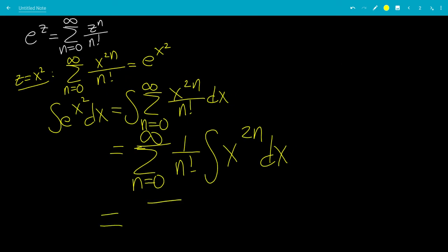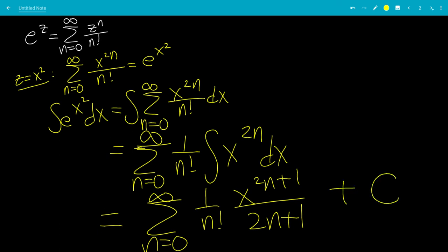We can finally rewrite this. So the integral of x to the 2n, simple, it's reverse power rule. That would be x to the 2n plus 1 over 2n plus 1. And then finally, we have to add c. So this c is outside the sum.